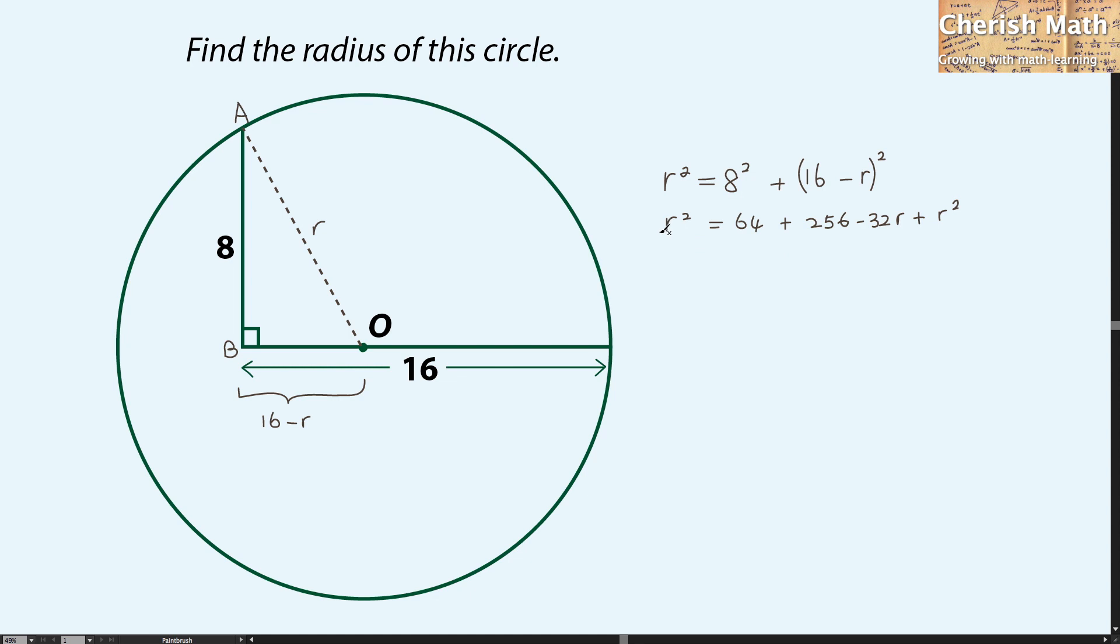And now, by simplifying the equation, that turns 32R equal 64 plus 256 is 320.